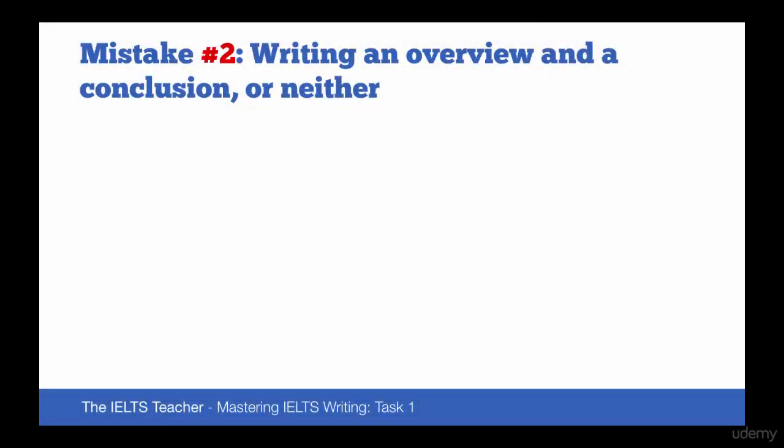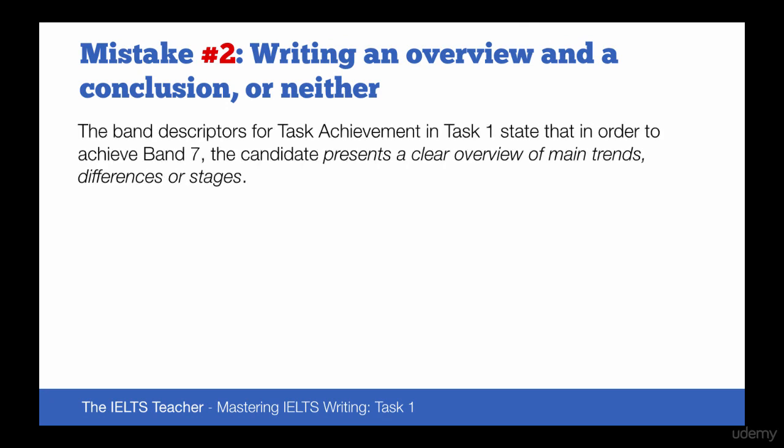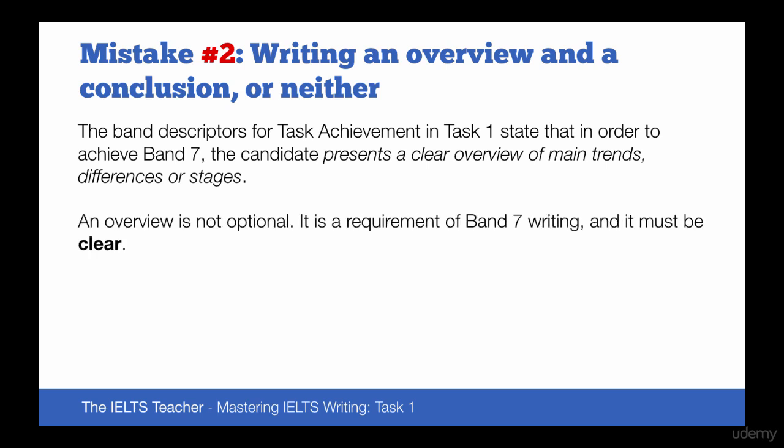The second mistake is when people either write an overview and a conclusion, or they write neither. This is a real problem. The band descriptors for task achievement in task one state that in order to achieve a band 7, the candidate presents a clear overview of main trends, differences, or stages. Even for band 6, the requirement is to present a clear overview with information appropriately selected. So an overview is not optional — it's a requirement of band 7 and band 6 writing, and it must be clear within your response.